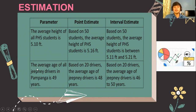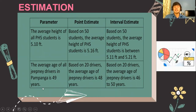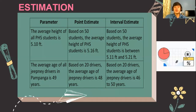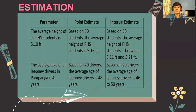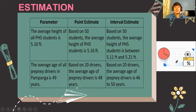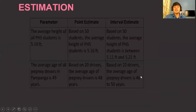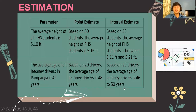Let's have another example. The average age of all Jeepney drivers in Pampanga is 49 years old — that is the parameter. When we perform sampling techniques, we will have a statistical value representing the sampling distribution of the sample means. If you want to report a single value, based on 20 drivers, the average age is 48 years old. Or if you want to report two values, based on 20 drivers, the average age of Jeepney drivers is 46 to 50 years old.